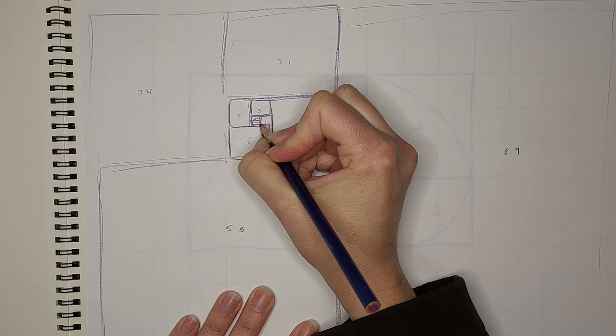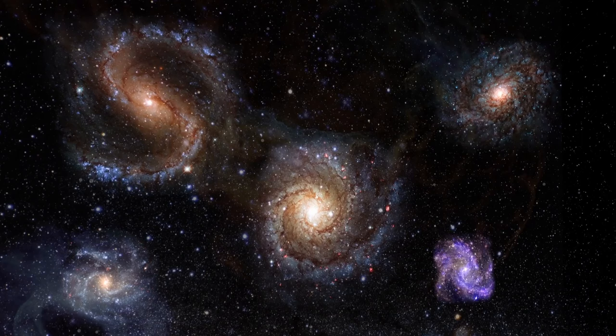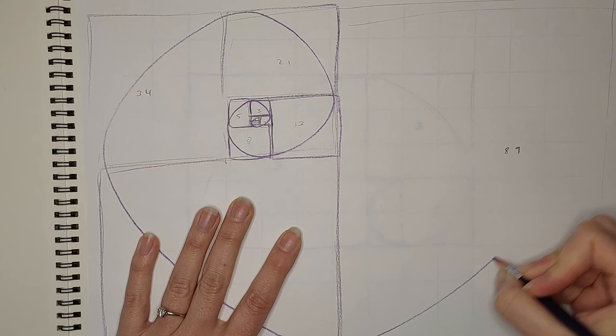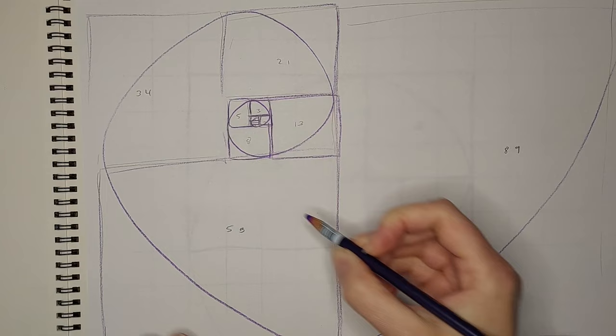This spiral shows up everywhere. It shows up in galaxies, spiral galaxies. This is the math of them, little seashells. This is the math of them.